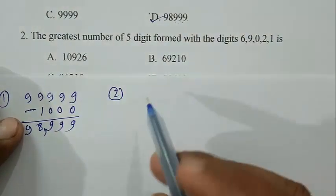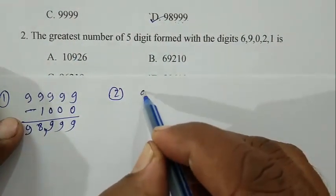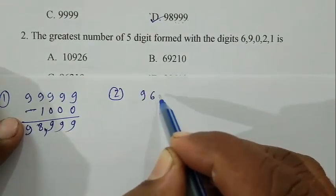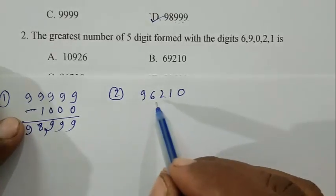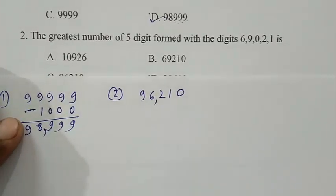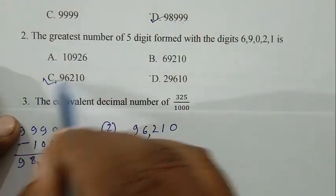First we have to calculate the greatest number. We start with the greatest digit, that is 9, then 6, then 2, 1, 0. So 96,210. C is the right answer.